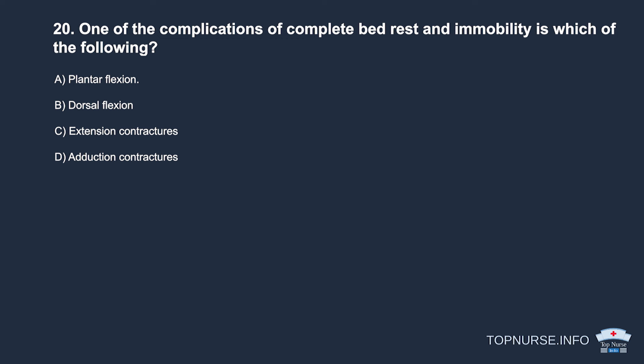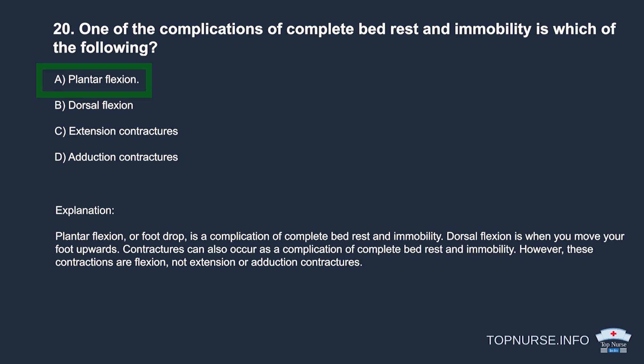Question 20: One complication of complete bed rest and immobility is: a. Plantar flexion. b. Dorsal flexion. c. Extension contractures. d. Adduction contractures. Correct answer: a. Plantar flexion. Plantar flexion, or foot drop, is a complication of complete bed rest. Dorsal flexion is moving the foot upward. Contractures can also occur, but they are flexion contractures, not extension or adduction.